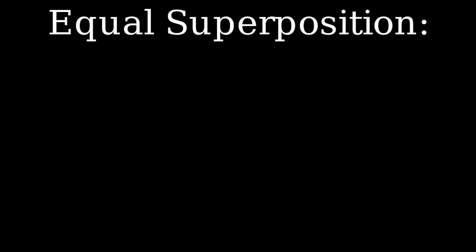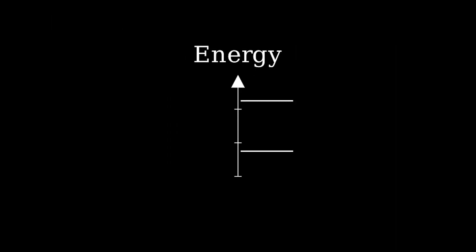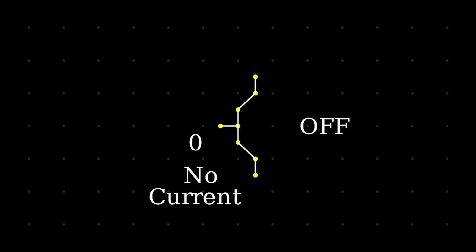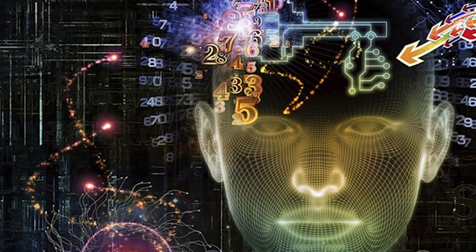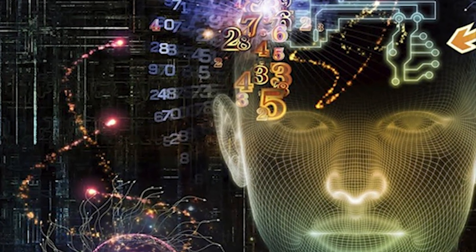For example, if we take an equal superposition of the zero and the one state, that does not mean that our particle has half the energy between the zero and the one state. What it actually means is that you have a 50% chance of measuring your particle in the zero state, and a 50% chance of measuring your particle in the one state. There's no classical analog to this. You can never have a switch that has a 50% probability of one thing or another. This inherent uncertainty is actually where the power of quantum computing comes from.